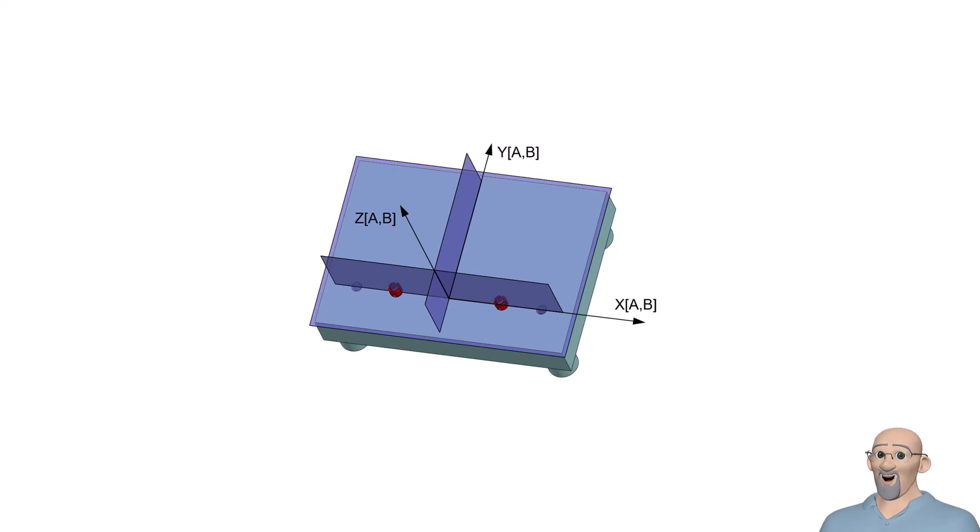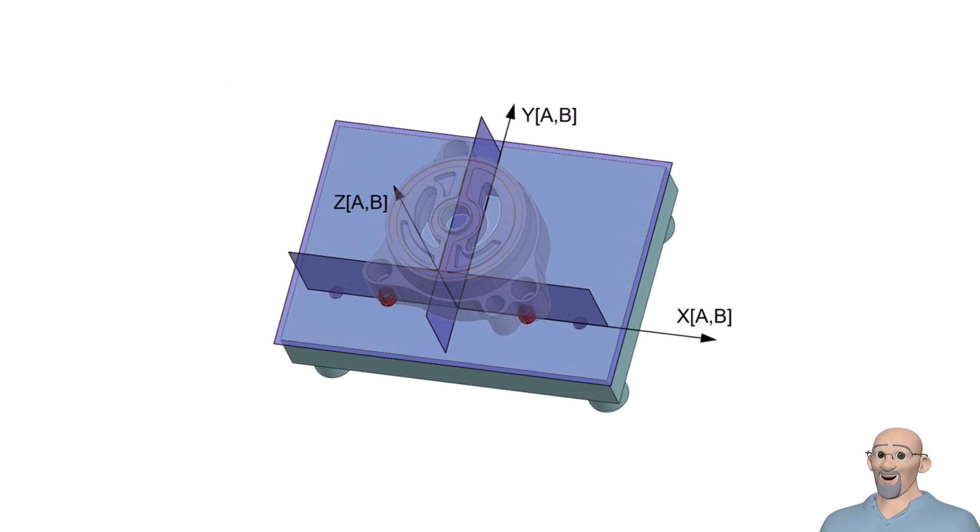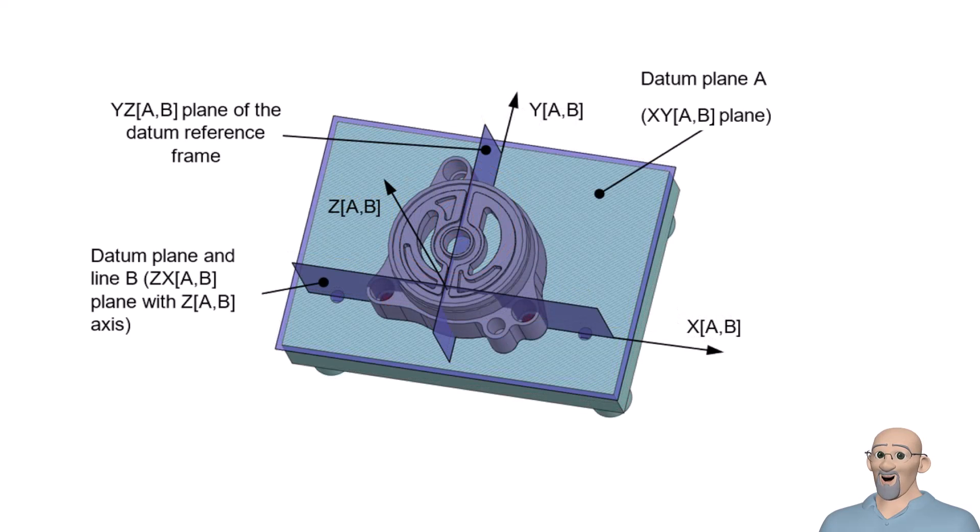To inspect this part, we will first mate datum feature A with its simulator. Then we will grow the datum feature simulator B pins. The part will center itself based on how the form, size, orientation, and relative location error of the two holes mates with the two datum feature simulator pins. Once the part is mated with the datum feature simulators, the part is related to the datum reference frame and can now be inspected.